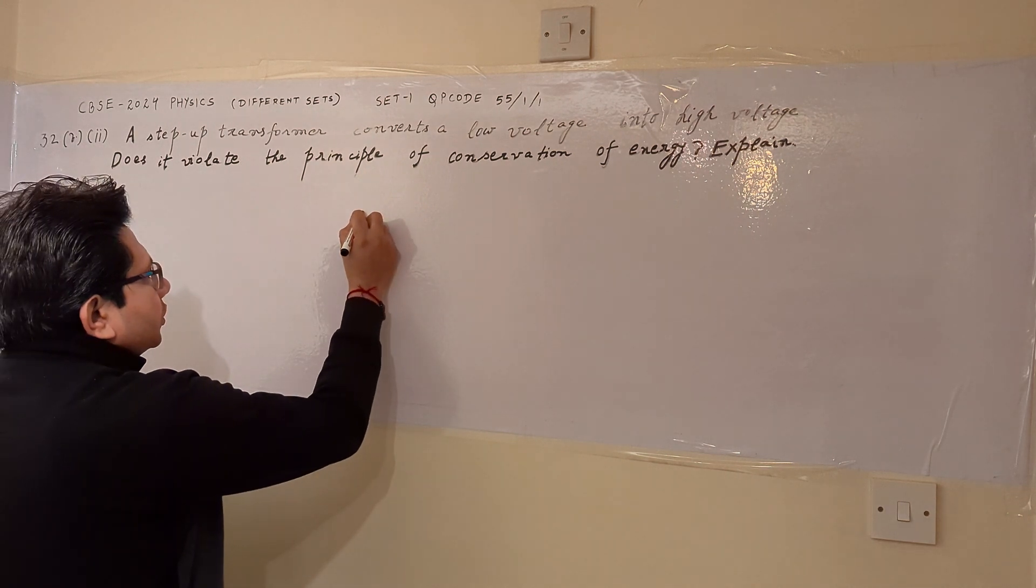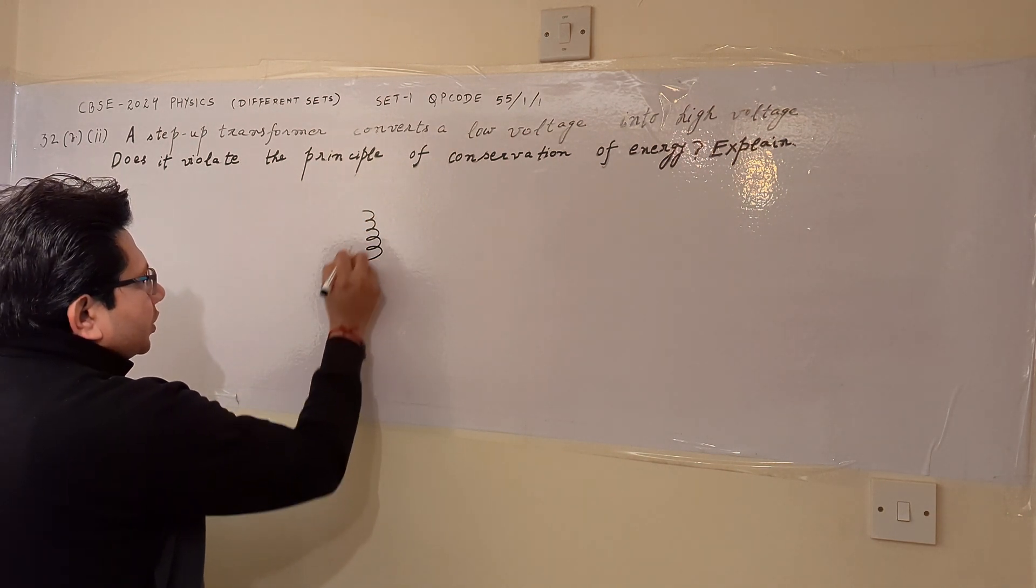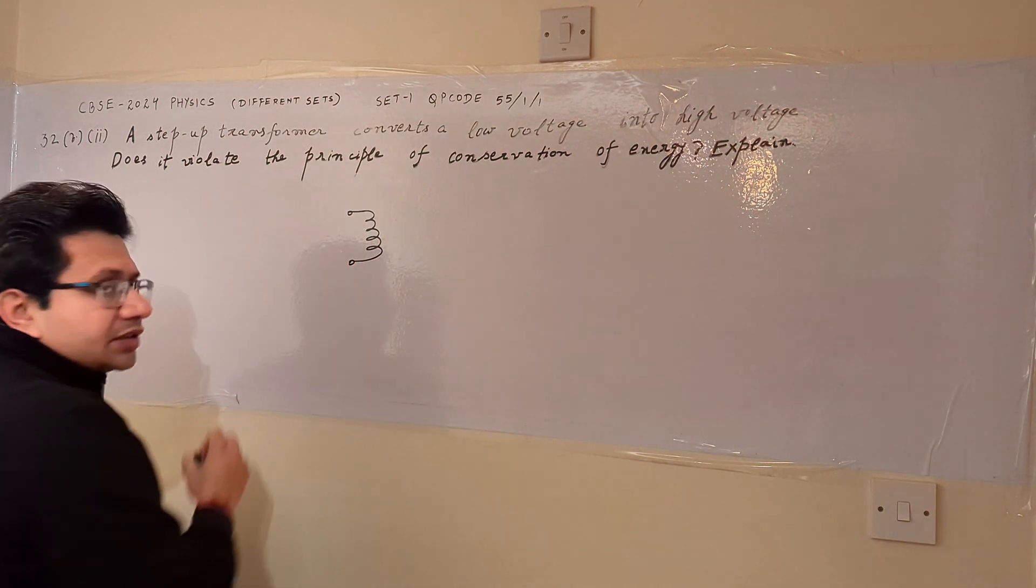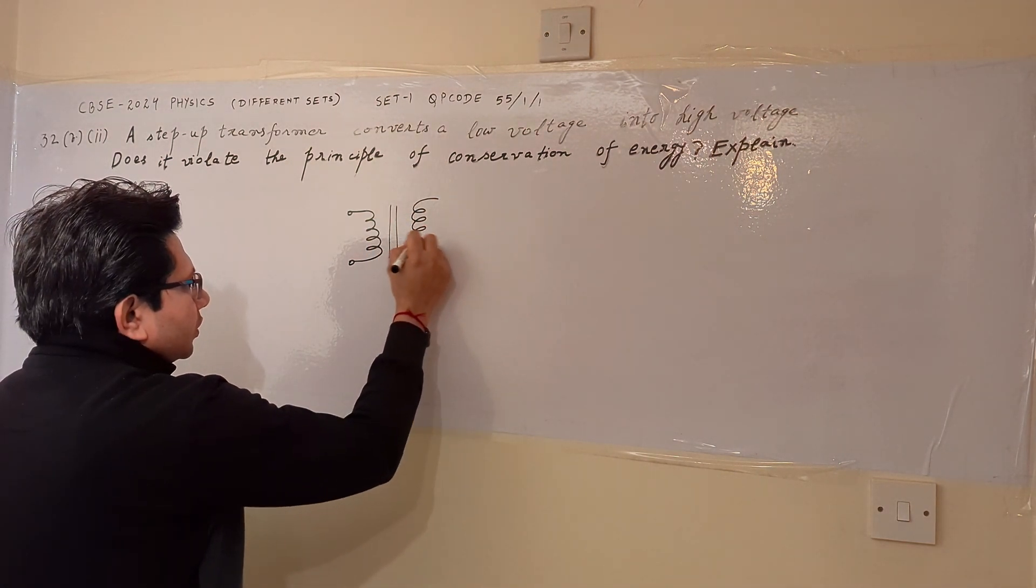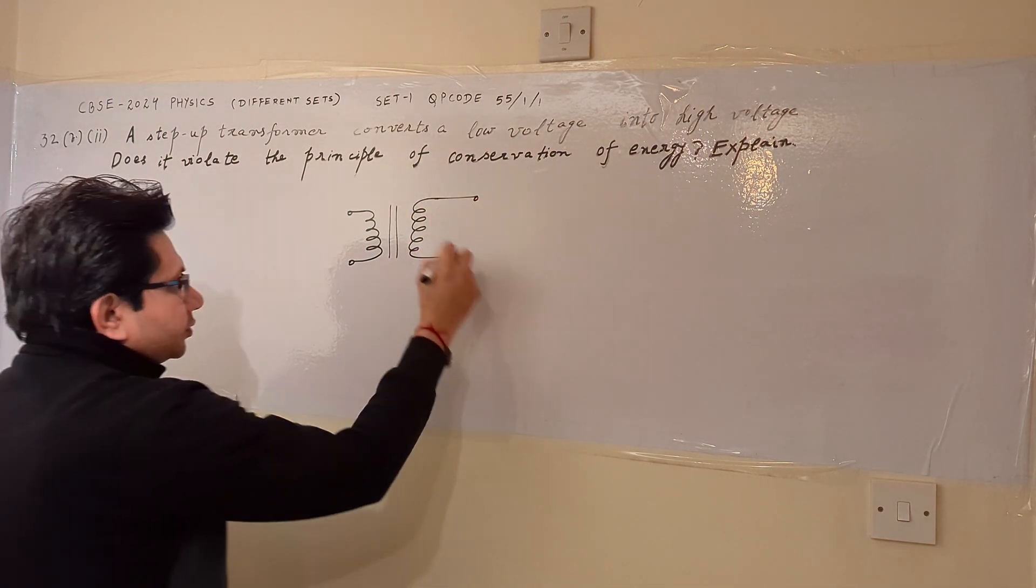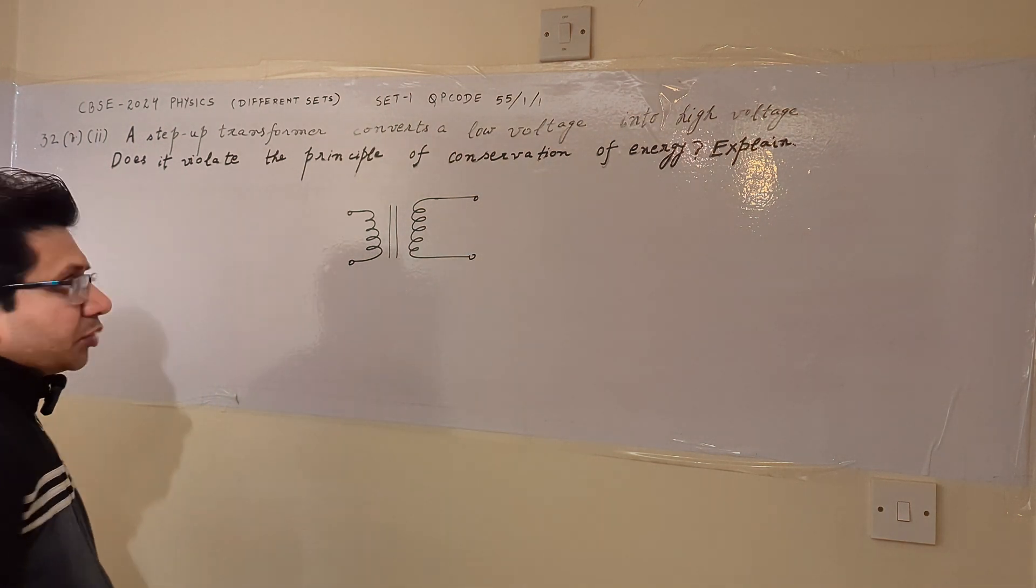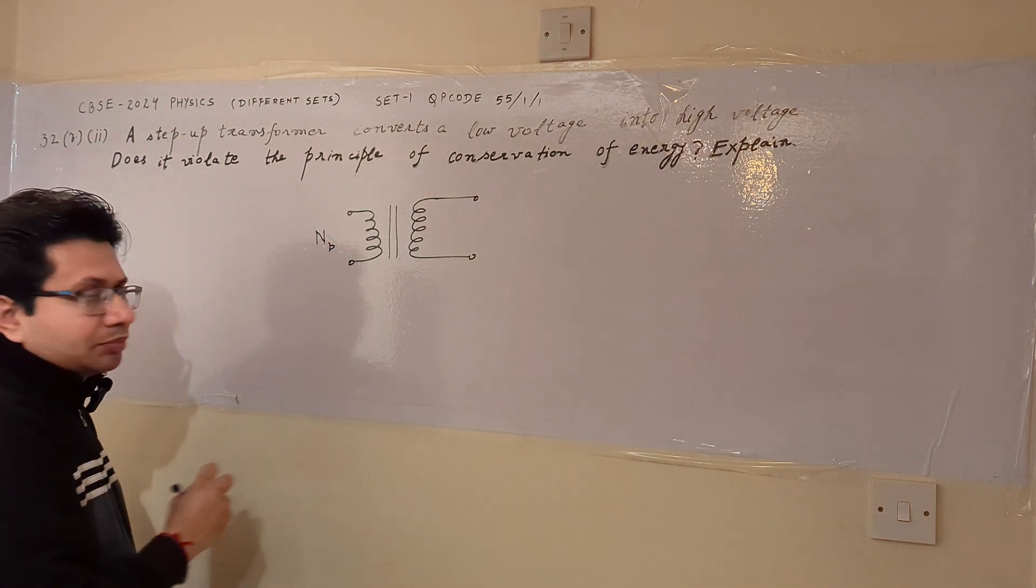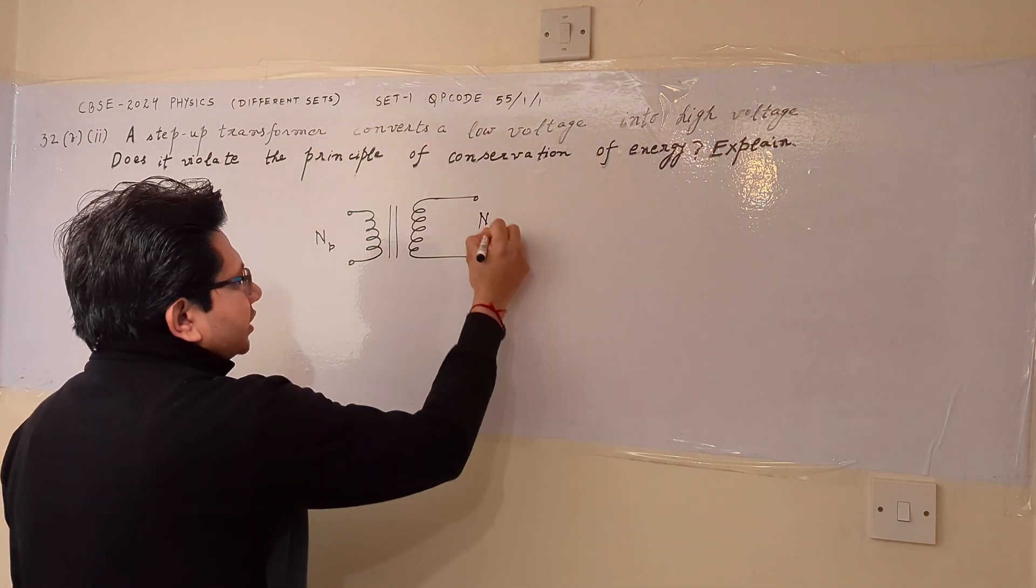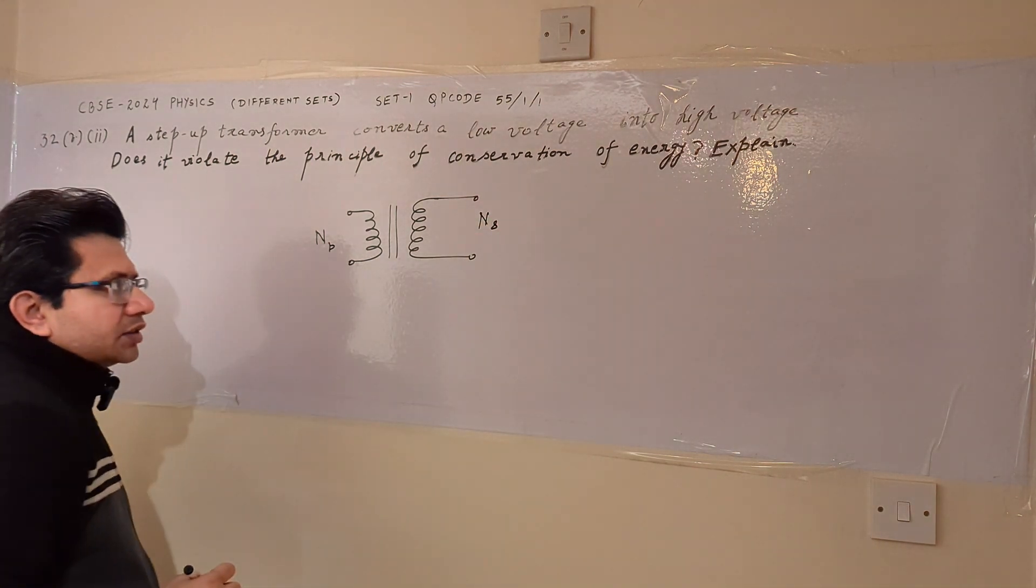So in a transformer, we know that there is a primary side, there is a core and there is a secondary side. In primary side, there are certain number of turns. For example, these are N sub T and in the secondary side, the number of turns are N sub S.